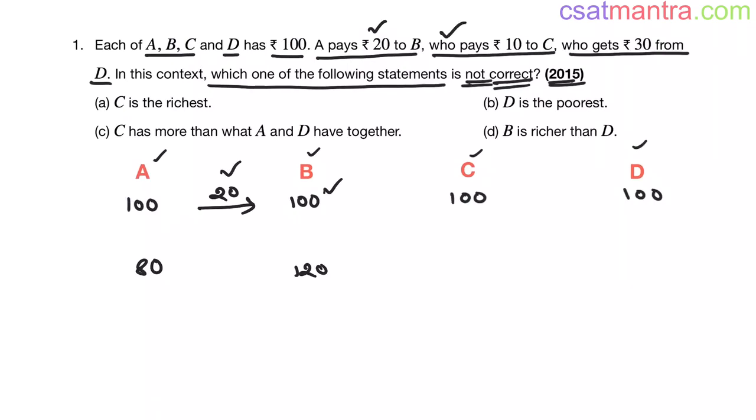Now, who pays 10 rupees to C? This who is B, my friends. So B is paying 10 rupees to C. In that case, B will be having 110 rupees. We have to subtract 10 rupees from 120. And C will be having 110 rupees. 100 plus 10 rupees equals 110.